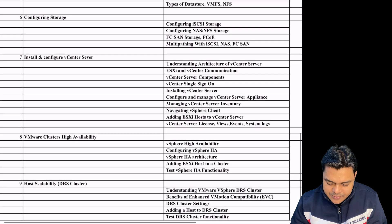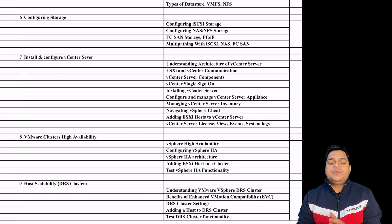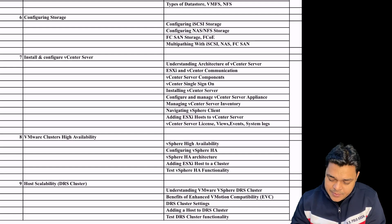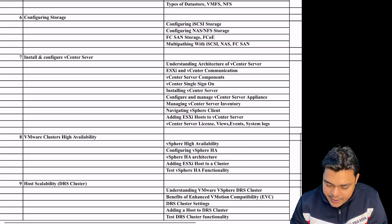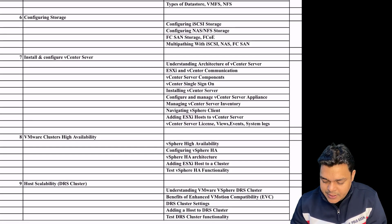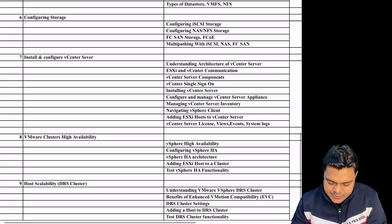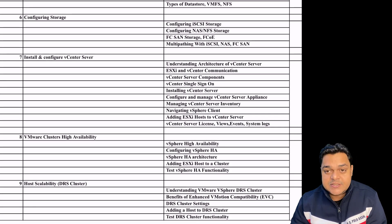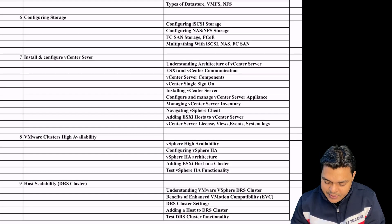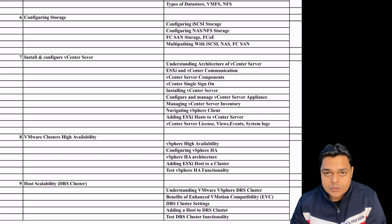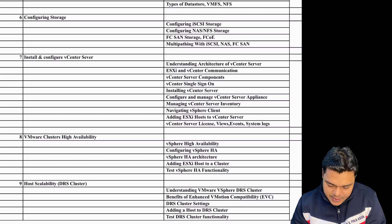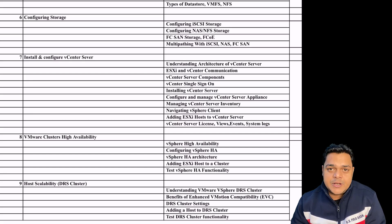Then we'll cover vCenter Server installation and configuration — understanding the prerequisite method, vCenter inventory, SSO, HA, and DRS. All topics will be covered in vCenter management. Under VMware Cluster, you'll find HA, DRS, and Fault Tolerance. I'll give you complete details of the VMware vCenter cluster.